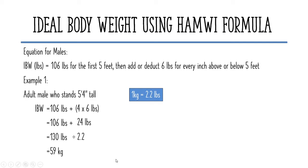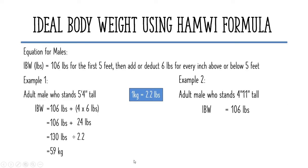Another example is an adult male who stands 4 feet and 11 inches tall. We start with 106 pounds, but as you notice, this client did not reach 5 feet. According to the equation, we deduct 6 pounds for every inch below 5 feet. Since this patient needs 1 inch to reach 5 feet, we multiply 1 inch by 6 pounds.